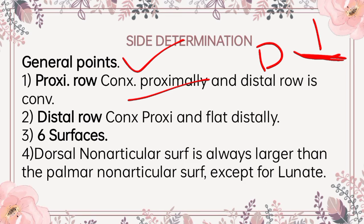Each bone has 6 surfaces. The palmar and dorsal surfaces are non-articular — palmar means palm side and dorsal is the posterior side — except for the triquetral and pisiform, which are arranged overlapped, so their palmar and dorsal surfaces are articular. The lateral surface of the two lateral bones, scaphoid and trapezium, are non-articular. The medial surface of the three medial bones — triquetral, pisiform and hamate — are non-articular. The dorsal non-articular surface is almost larger than the palmar non-articular surface, except for lunate, in which the palmar surface is larger than the dorsal.